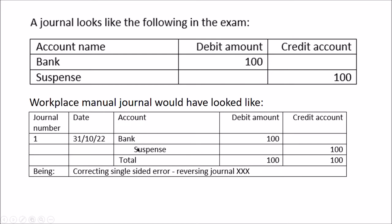You won't see the real-world format in the exam. In real life for a manual system, you would indent the credit slightly to the right, so debits line up on the left and credits are indented. That's how it was done historically, and the reason is that a journal might go to 40 lines, and when posting into T accounts, indenting the credits makes it easier to see. That's why debit balances traditionally go first — it simply makes it easier to line up debits and then credits.